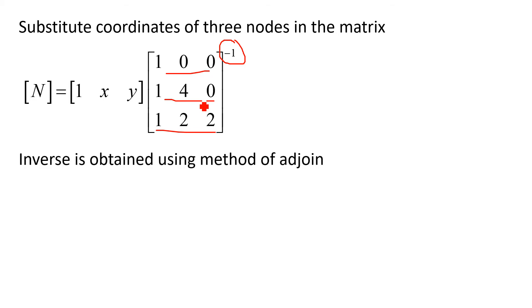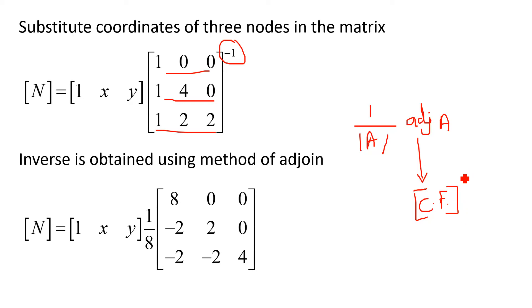If you determine the inverse by using method of adjoin, that is 1 upon determinant of that matrix A into adjoin matrix. Adjoin matrix is nothing but transpose of cofactor matrix. We have to find out cofactor of each element of this 3 by 3 matrix. This is very well known method and all of you know how to find out inverse using method of adjoin.